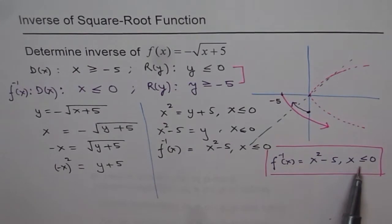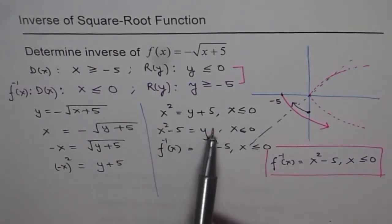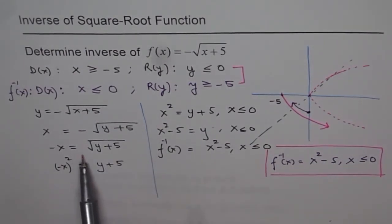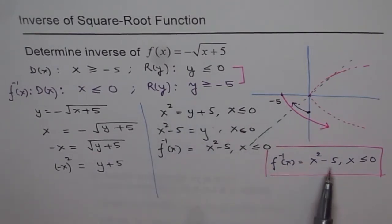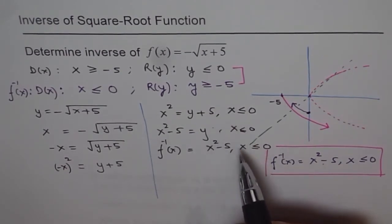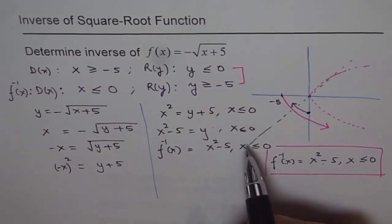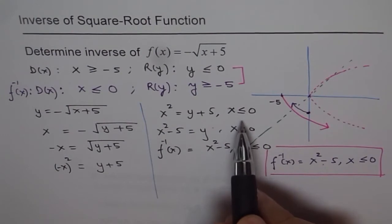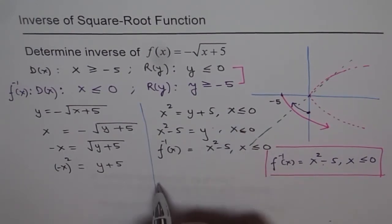We know that x ≤ 0, which we imposed because we were squaring both sides, and we get y ≥ -5. That is correct — so that is how it should be. It is very important that whenever you have these kinds of functions, you take care of domain and range and apply the appropriate restrictions.